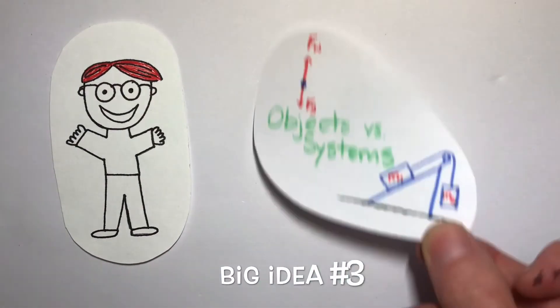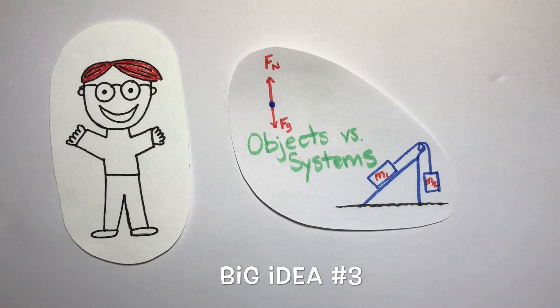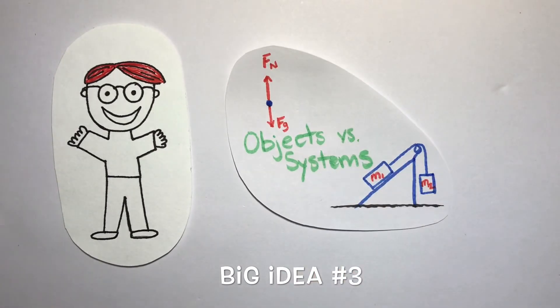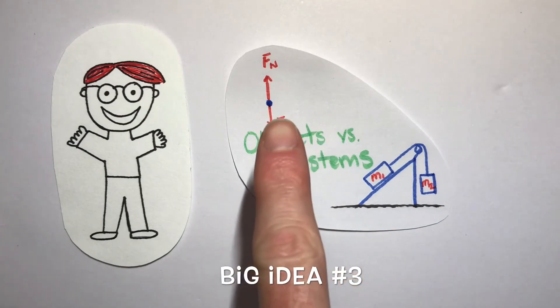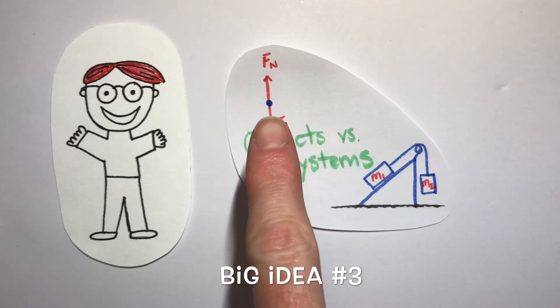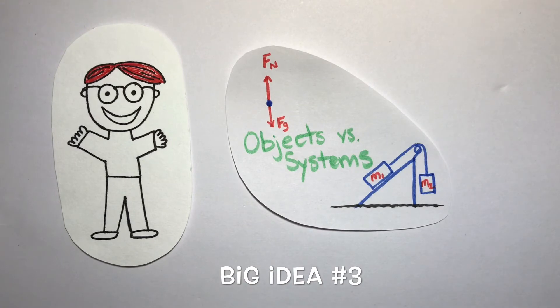Now big idea number three is all about objects and systems. An object in the world of physics is basically just written as a point and can represent absolutely anything. It could be a planet, it could be an animal, or a human. It's anything we want. And what you do with that object is you analyze everything that's going on with it.